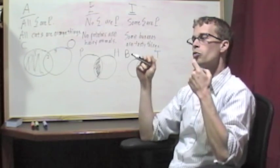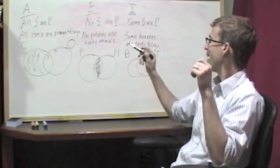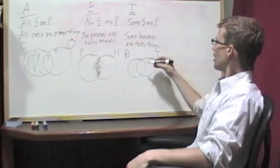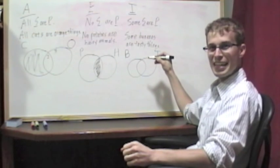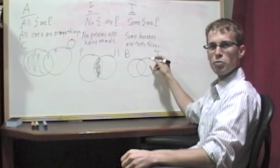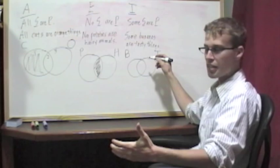So we're dealing with something that's both in the banana circle on the left and the tasty thing circle on the right. We're dealing with the intersection between bananas and tasty things. We don't want to shade it out because that would mean that nothing is there. We want to say that at least one thing is there.